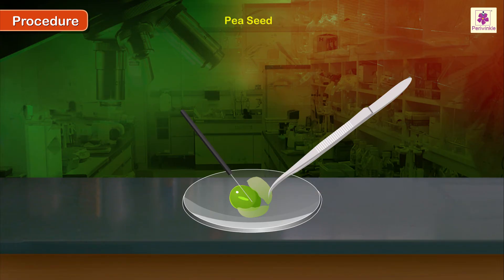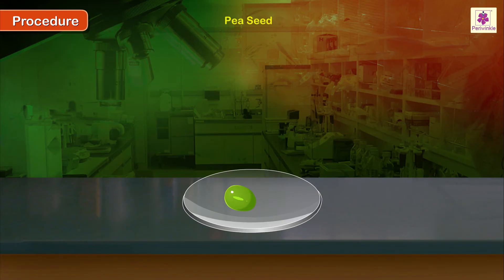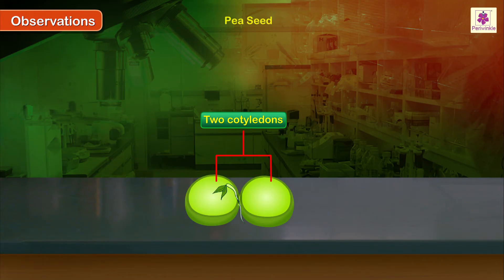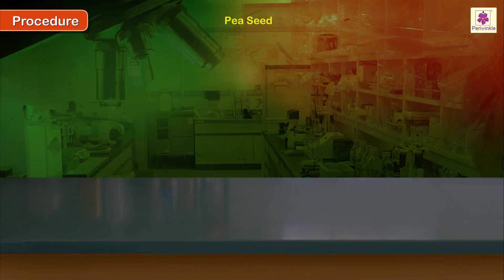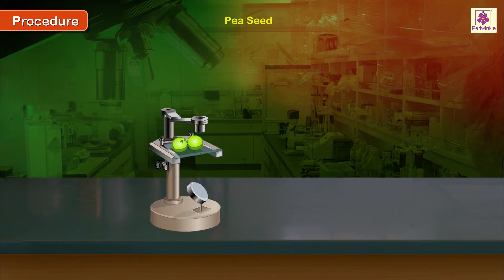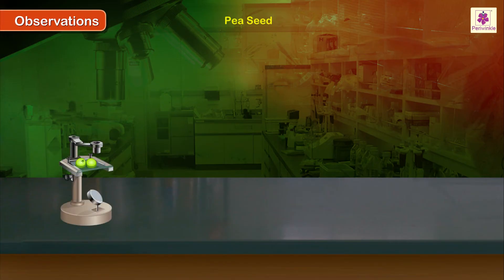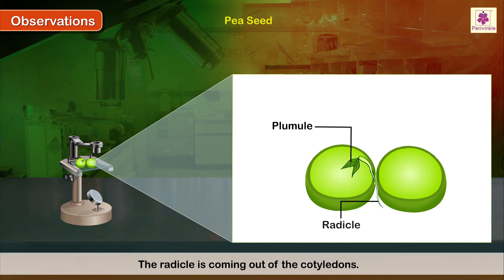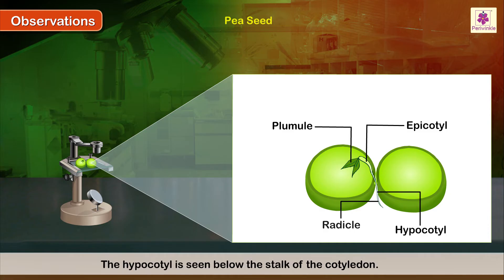Separate the two cotyledons of the seed using the needle. Observations: it has two cotyledons; the cotyledons are thick and fleshy. Observe the seed through the microscope and note your observations. The plumule is enclosed between the two cotyledons. The radicle is coming out of the cotyledons. The epicotyl can be seen above the root and the hypocotyl below the stalk of the cotyledon.